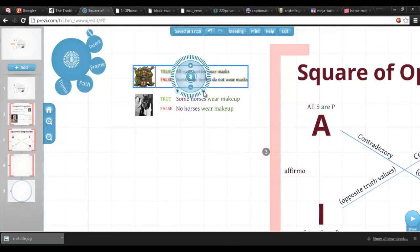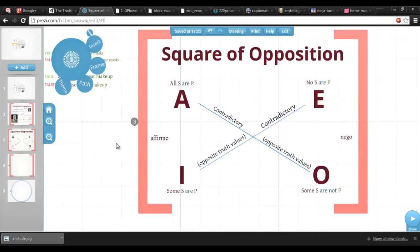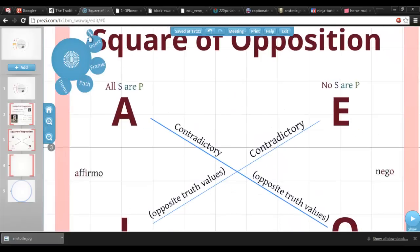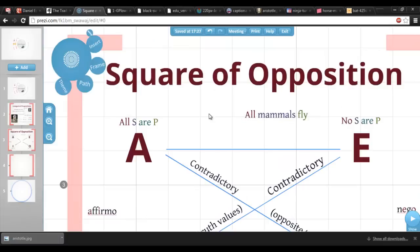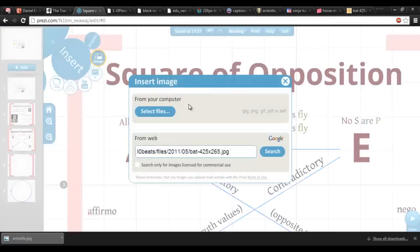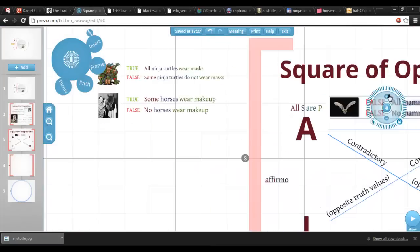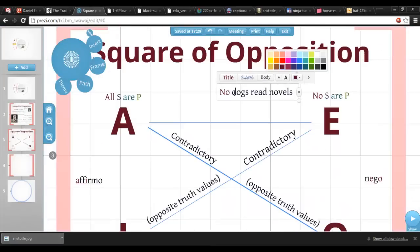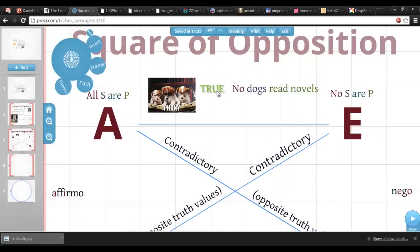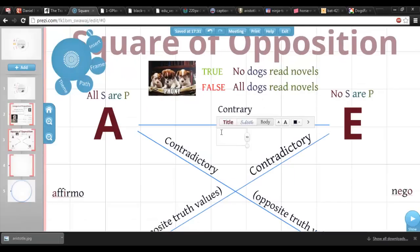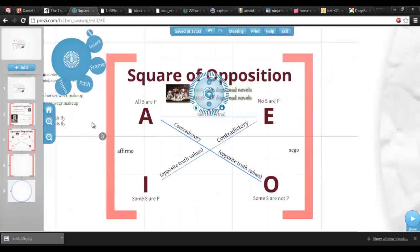We could have done that with the Venn diagrams. The edges of this square describe more complicated relationships that are a bit trickier, but can be just as useful. Consider the two universal sentences in the top edge of the square. A and E aren't contradictory, because they don't always have opposite truth values. Sometimes A and E sentences are both false. However, if one of them is true, the other must be false. These two sentences can never be true at the same time. This is called the contrary relation, and it holds between the two universal propositions.